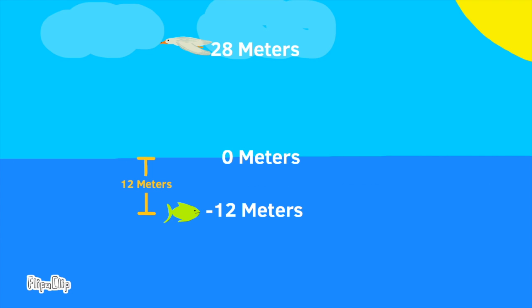The distance between the sea level and the fish is 12 meters. The absolute value of negative 12 is 12. In other words, an elevation of negative 12 is still 12 meters below sea level.